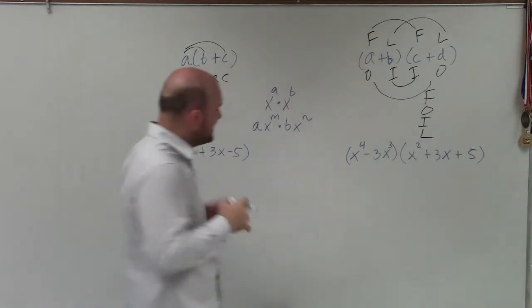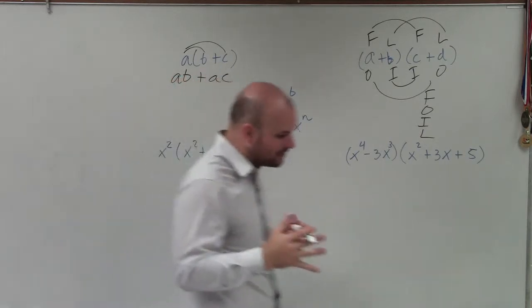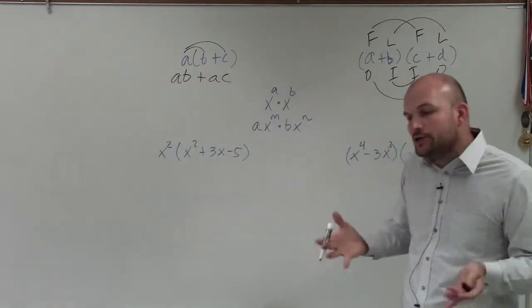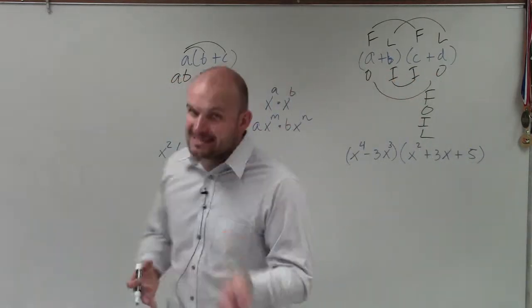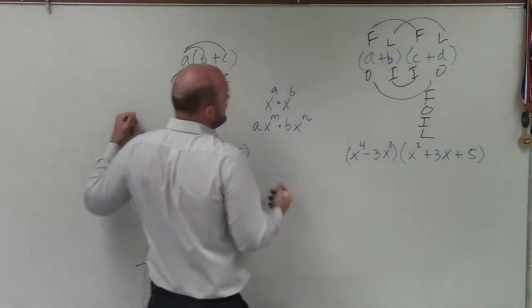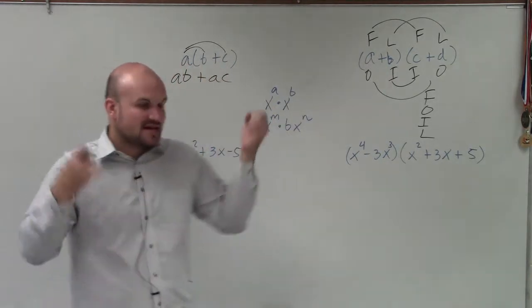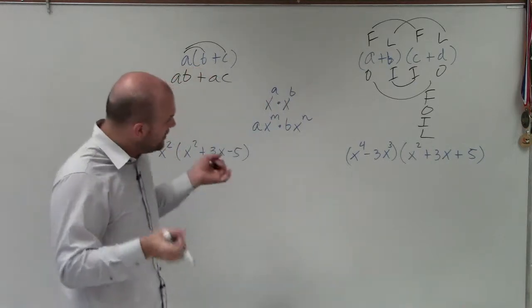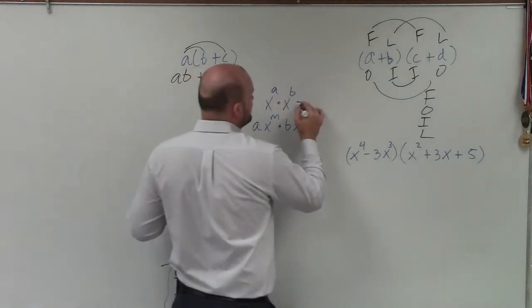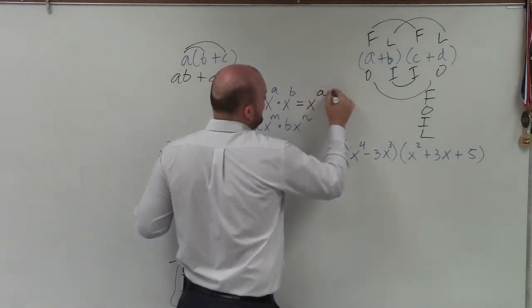The last thing, ladies and gentlemen, is when we're multiplying, we got to know the product rule for exponents. Because that comes up a lot. And basically, it says when you are multiplying two exponents, they have to have the same base. When you multiply two exponents, all we're simply doing is adding the powers, a plus b.